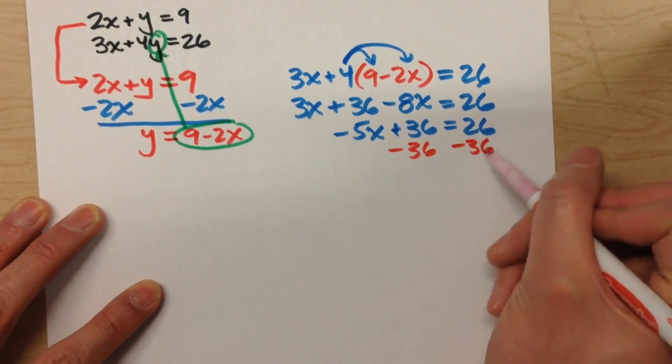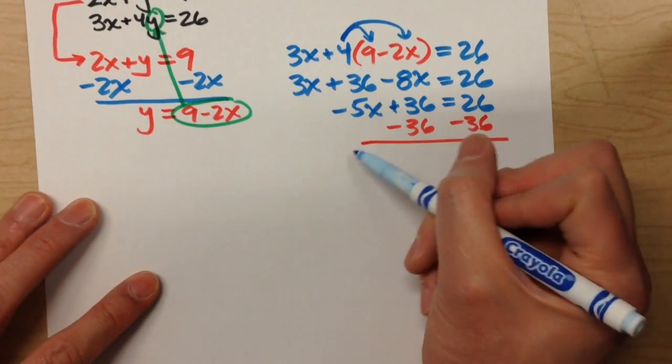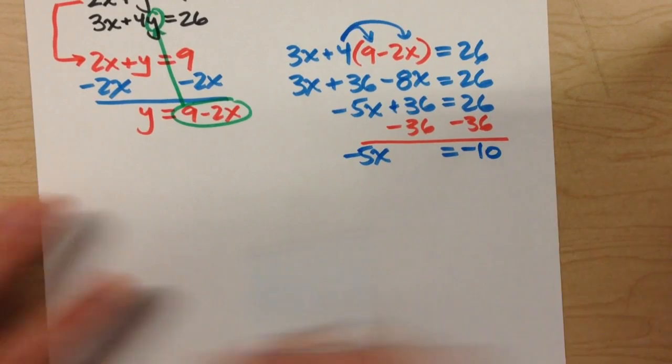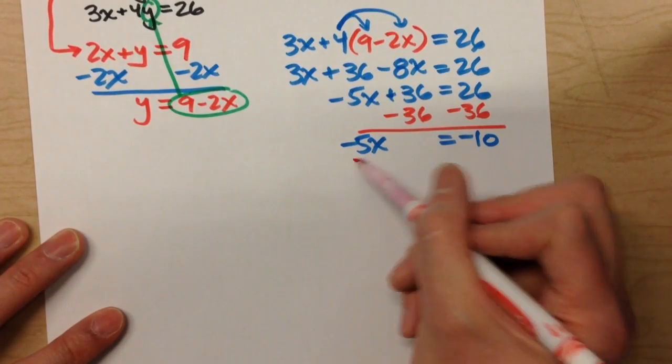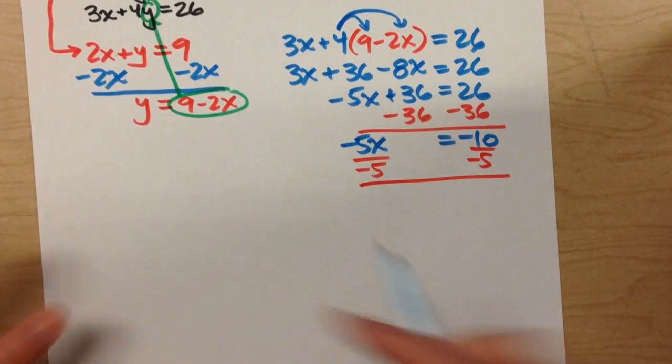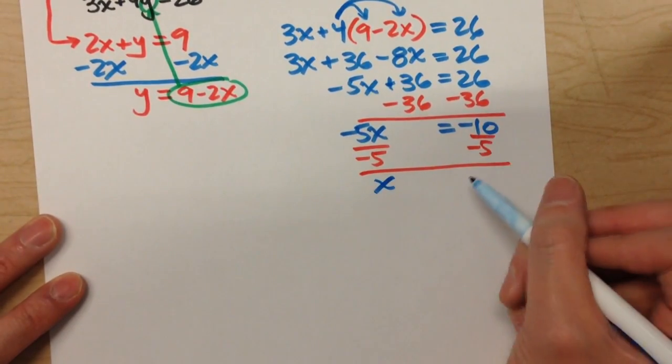Minus 36 on both sides, negative 5x equals negative 10. Divide both sides by negative 5, x equals 2.